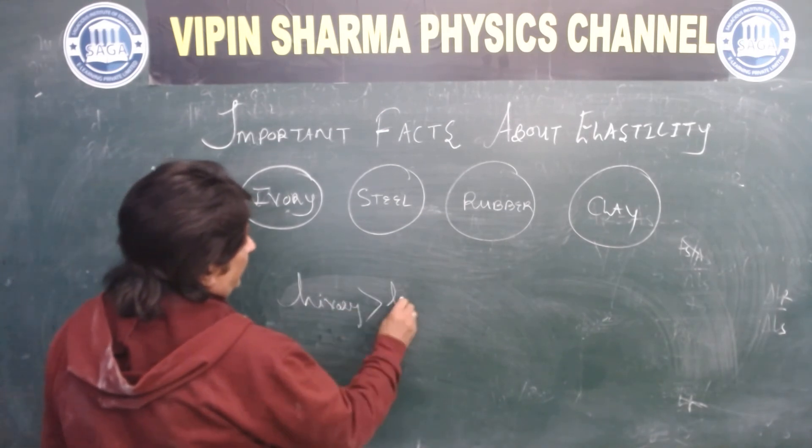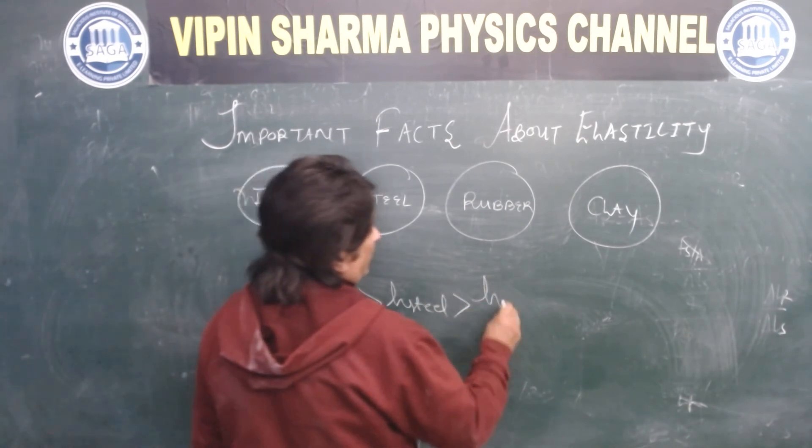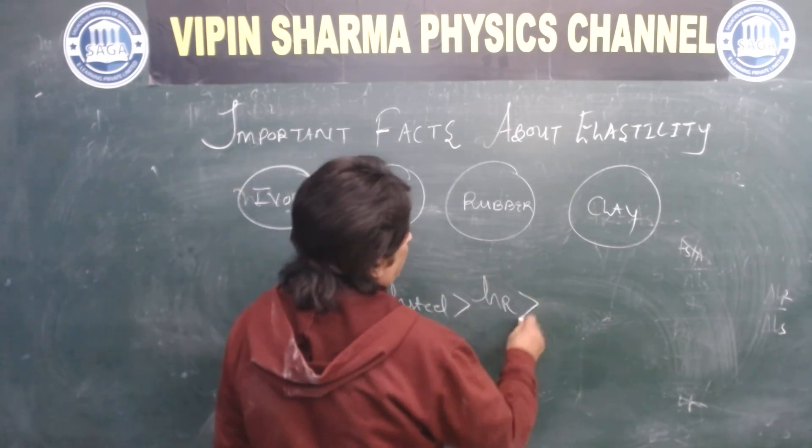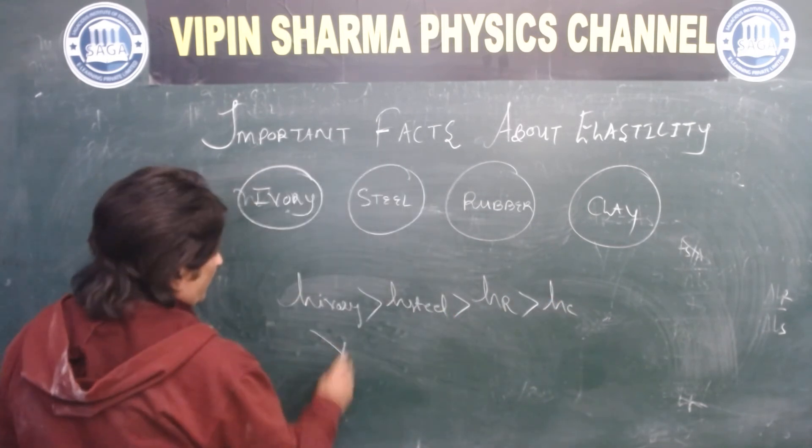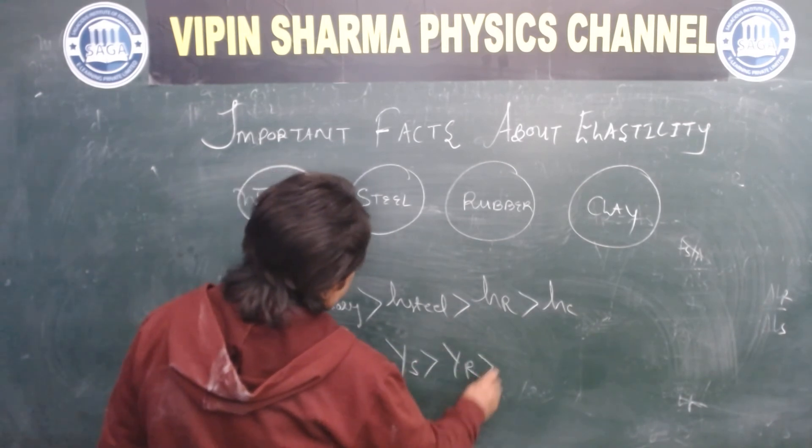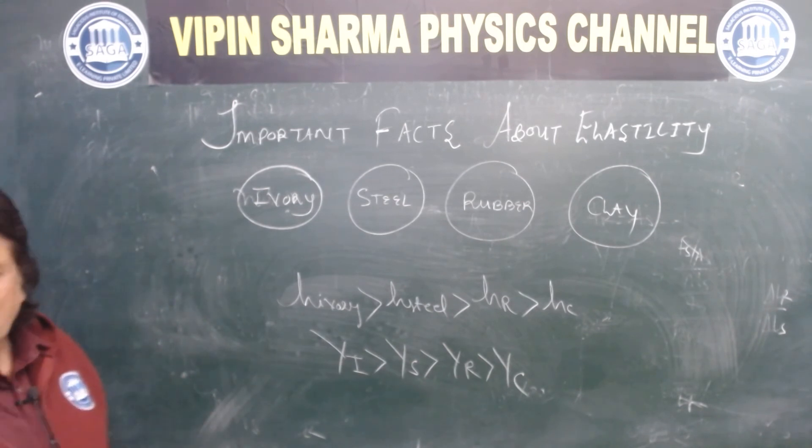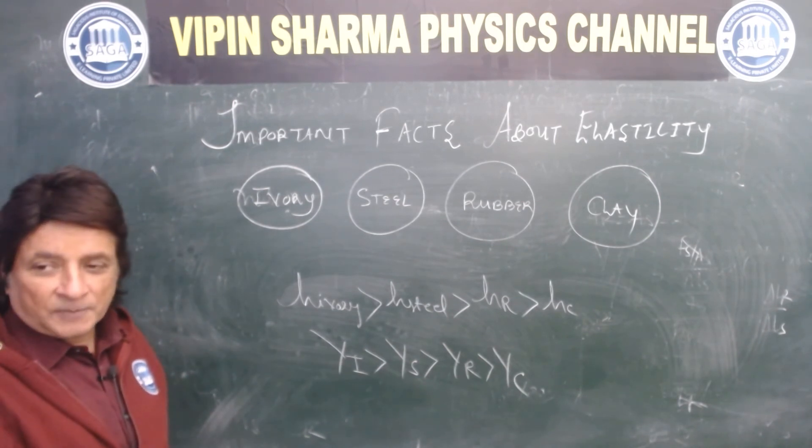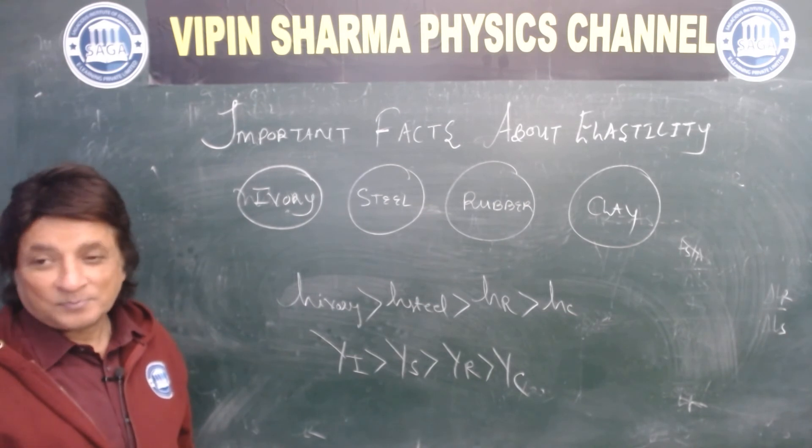Ivory greater than steel greater than rubber greater than clay. Because Young's modulus for ivory is greater than steel is greater than rubber is greater than clay. c for clay, r for rubber, s for steel, and i for ivory. Interesting.